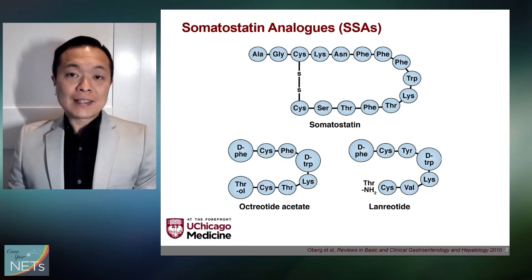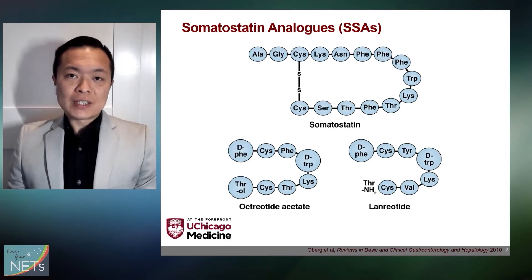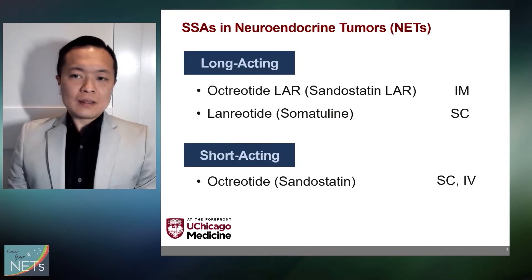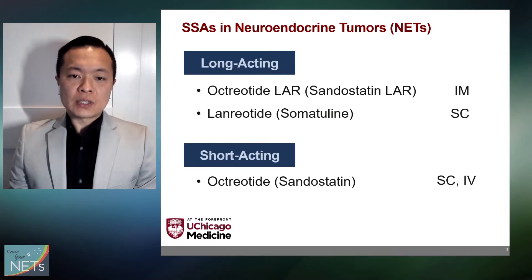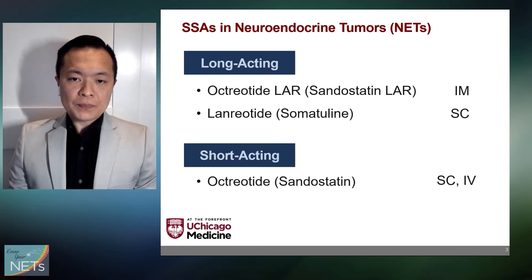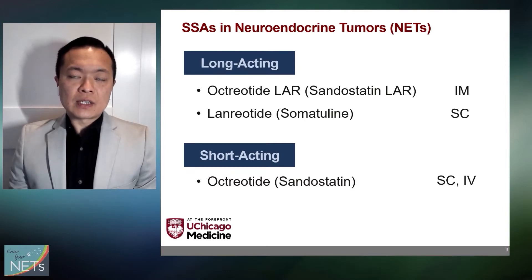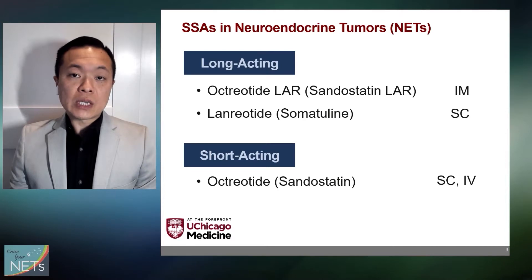Somatostatin analogs, or SSAs, are drugs that mimic somatostatin, which is a naturally occurring hormone in our bodies. Here are some of the SSAs we commonly use for the treatment of neuroendocrine tumors. They include long-acting versions such as octreotide LAR and lanreotide, and also short-acting versions such as octreotide. Octreotide LAR is given as an intramuscular injection, whereas lanreotide is given as a deep subcutaneous injection. Short-acting octreotide is available as both subcutaneous and intravenous versions.